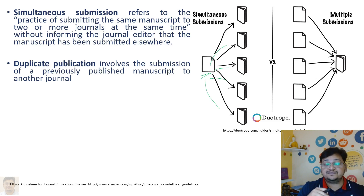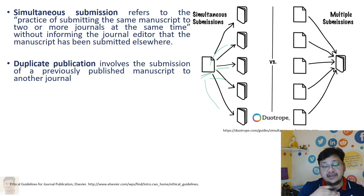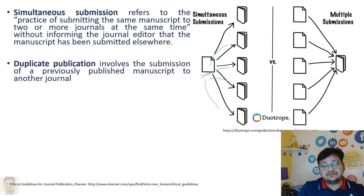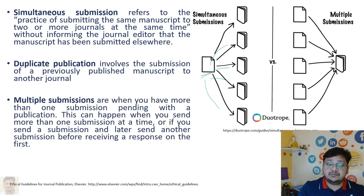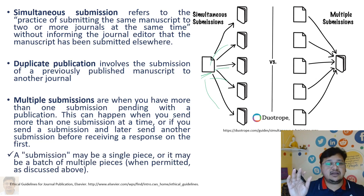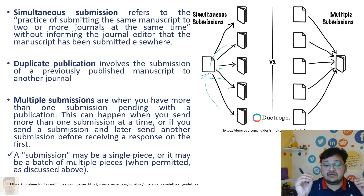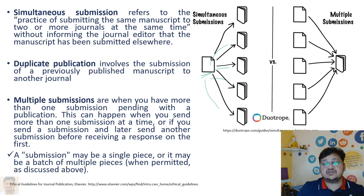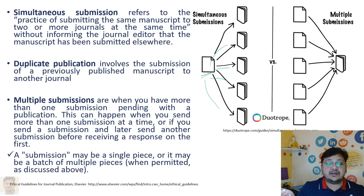This creates a career-damaging situation for the author. Duplicate publication involves submission of a previously published manuscript to another journal. Multiple publication occurs when you have more than one submission pending — either by sending multiple submissions at once or by sending another submission before receiving a response from the first. That also is to be avoided.